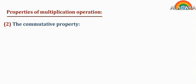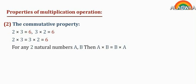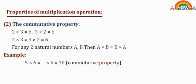Property 2: the commutative property. For example, 2 times 3 equals 6, and 3 times 2 also equals 6. Therefore, 2 times 3 equals 3 times 2 equals 6. For any two natural numbers a and b, a times b equals b times a. Another example: 5 times 6 equals 6 times 5, which equals 30. This is the commutative property.